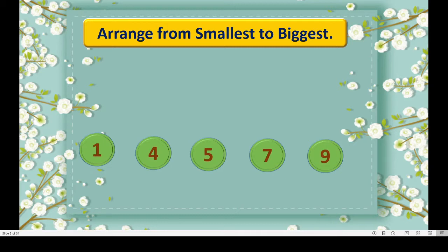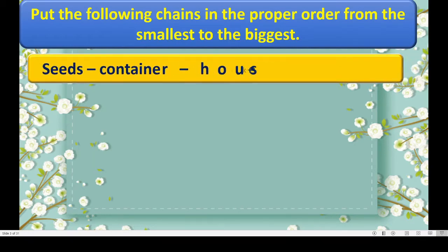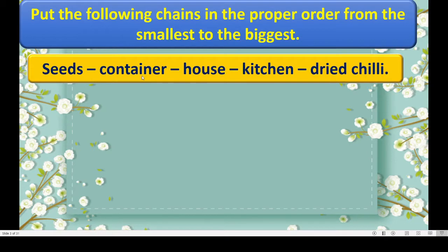Now we will follow the same thing by taking different examples. Put the following chains in the proper order from the smallest to the biggest. Here we can see some things: seeds, container, house, kitchen, dried chili. We have to write them from smallest to the biggest.